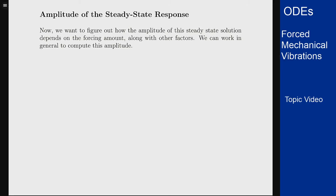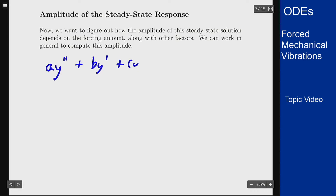This video is going to work out the algebra of how we find the amplitude of the steady-state response for a given damped forced oscillator with a given force and function of a certain frequency. We're starting with a y double prime plus b y prime plus c y equals f zero cosine of omega t.